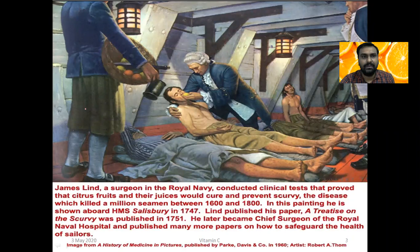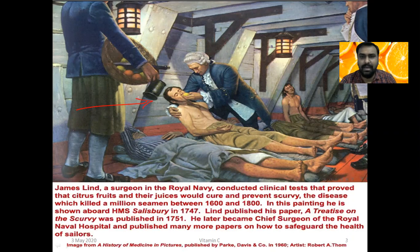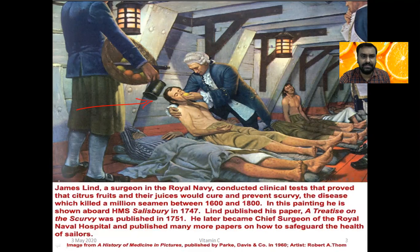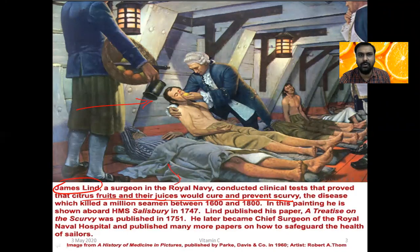Many sailors were dying because of Vitamin C deficiency and related infections. A Royal Navy surgeon, James Lind, gave citrus fruit to all the sailors, and he found that all the sailors were cured. By giving citrus fruit and juice — orange, lemon — many sailors were cured. This is why Vitamin C is so important.